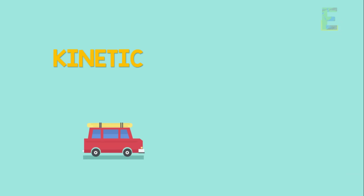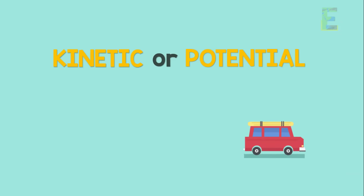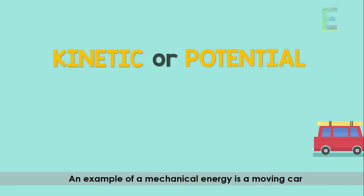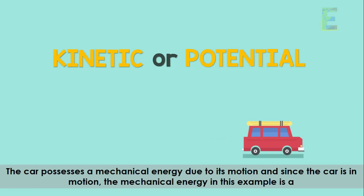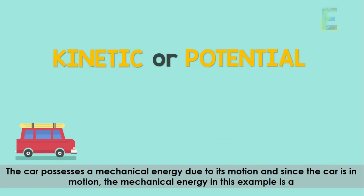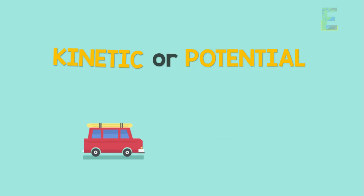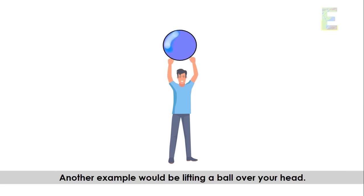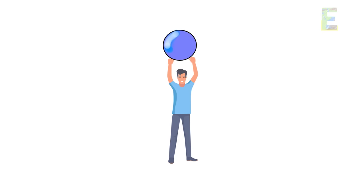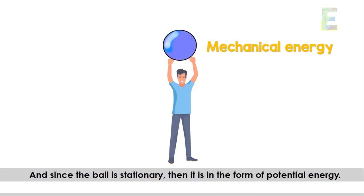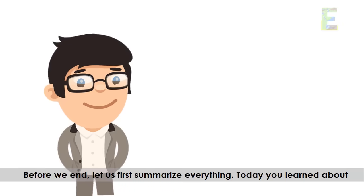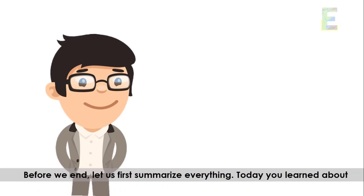Mechanical energy can be either kinetic energy or potential energy. An example is a moving car — the car possesses mechanical energy due to its motion, so in this case it is a form of kinetic energy. Another example is lifting a ball over your head — the lifted ball possesses mechanical energy due to its vertical position above the ground, and since it is stationary, it is in the form of potential energy.